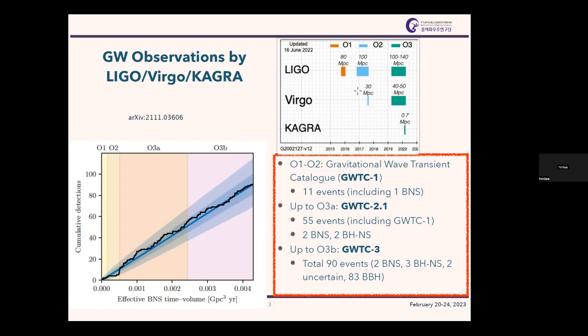GWTC-3 contains all the sources we have so far. The total number of events is 90: out of those, there are two binary neutron stars, three black hole–neutron star binaries, two uncertain sources, and 83 black hole binaries. The majority of sources are black hole binaries, with a small number containing neutron stars.